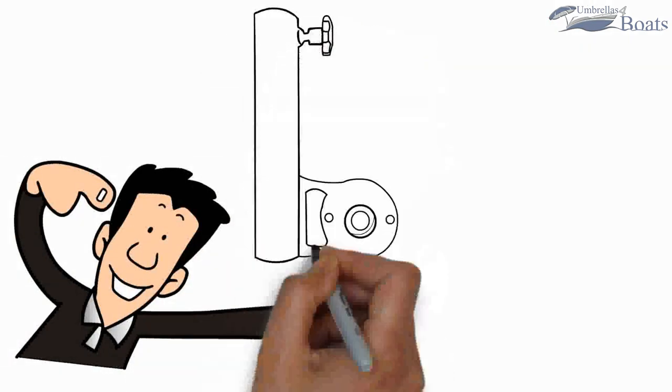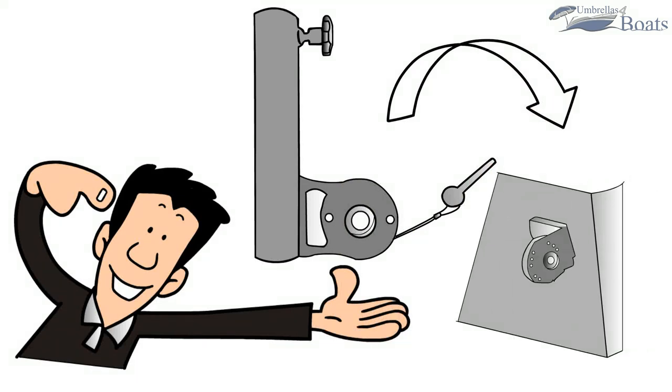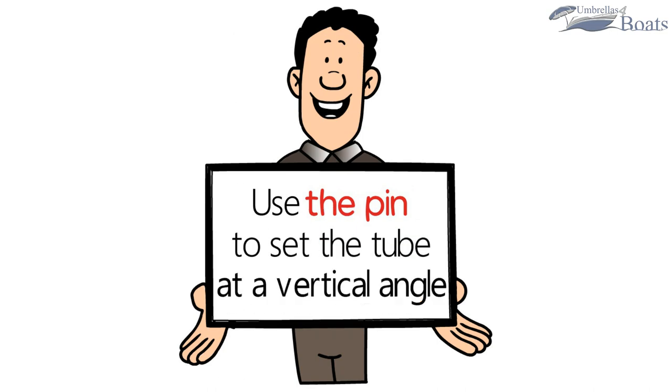Step 3. Install the tube bracket. Connect the two brackets and use the screw to secure them. Use the pin to set the tube at a vertical angle.